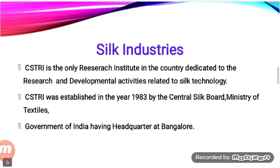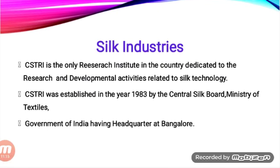The next industry is silk. India is well known for silk industries and is the second largest producer of raw silk, next to China. Raw silk is obtained by rearing silkworms, which is known as sericulture. Sericulture requires a large number of laborers, so it is called a labor-intensive industry. It provides employment to 7.56 million people, mainly from weaker and marginalized sections of society.